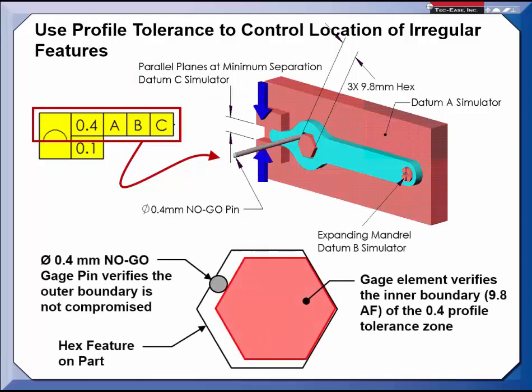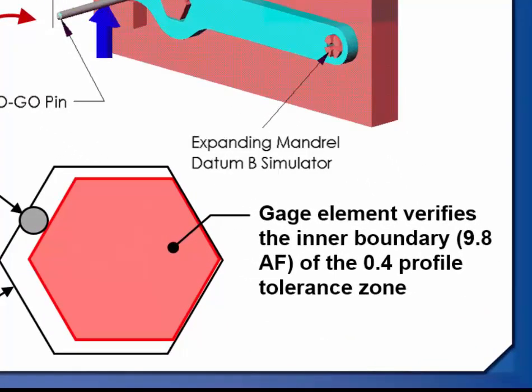The hexagon element on the gauge is produced at 9.8 mm across the flats. This represents the inner boundary.